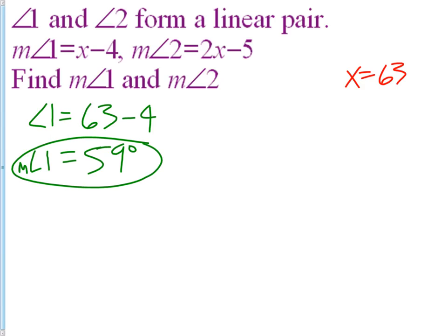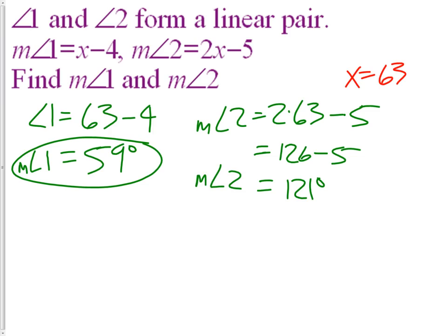Now for angle two, we're going to put 63 in for 2x and subtract 5. 2 times 63 is 126 minus 5 is 121. So we see the measurement of angle two is 121 degrees.